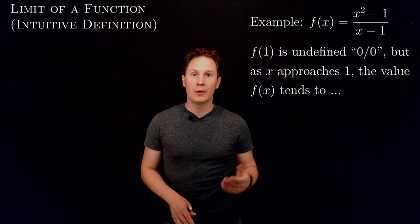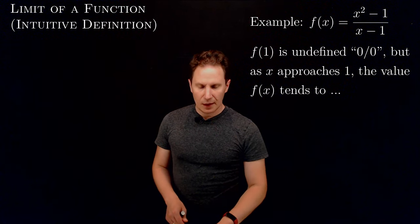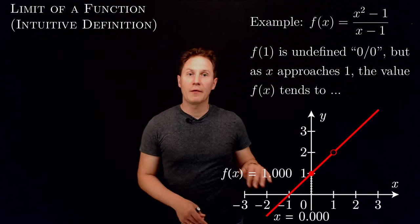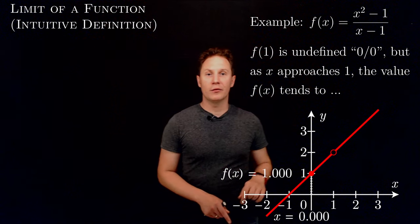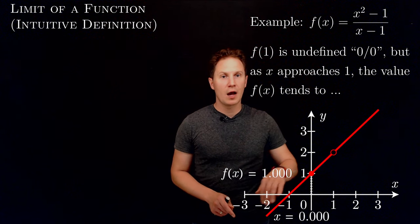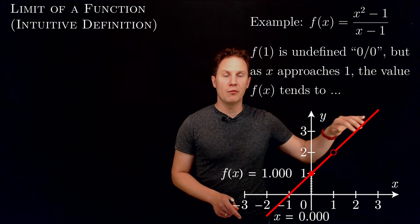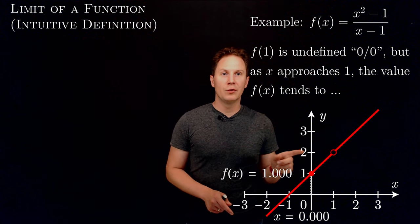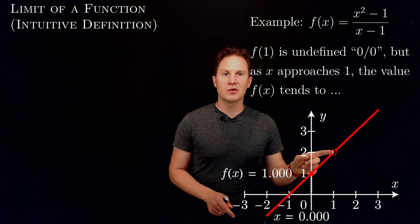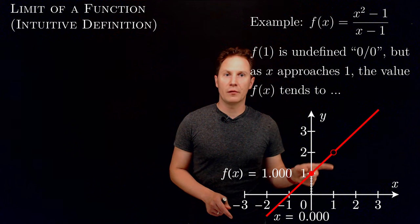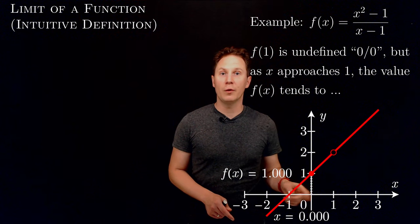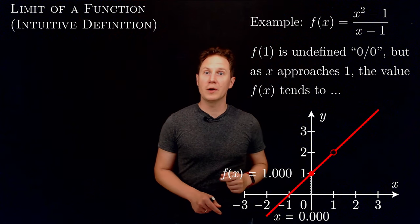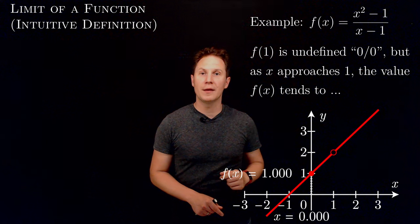If you plot the graph of f you get something like this. Here's the graph of our function in red, and you can see that there is a hole in the graph at x = 1. This is because the function is not defined there.